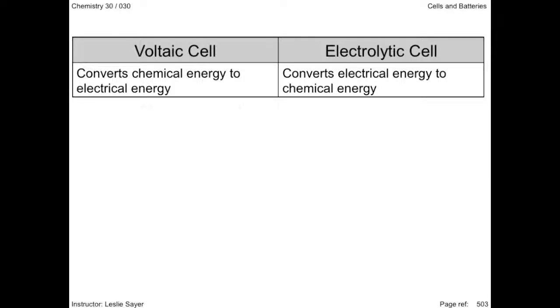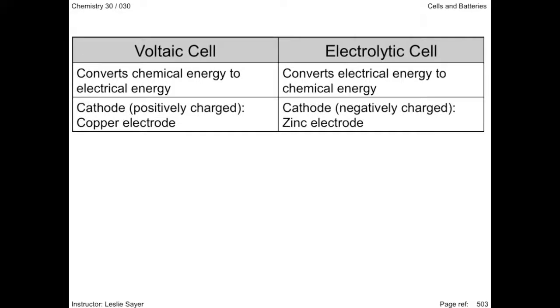The electrolytic cell is the opposite. The cathode is positively charged in the voltaic cell and negative in the electrolytic cell. To limit repetition, I didn't write it, but you could also add that the anode in the voltaic cell is negatively charged and in the electrolytic cell, the anode is positively charged.